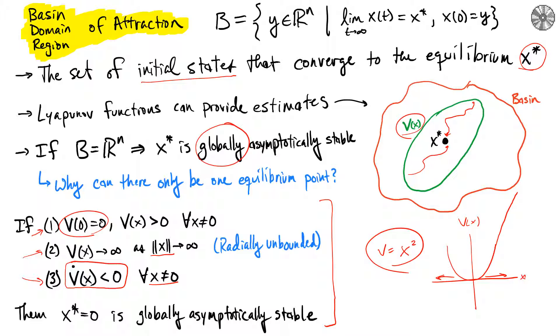three conditions with this new radially unbounded condition, then we can say that this equilibrium is not only asymptotically stable but also globally asymptotically stable. That means all initial points will indeed be inside the basin of attraction of this equilibrium, and so all state trajectories will lead to the equilibrium.